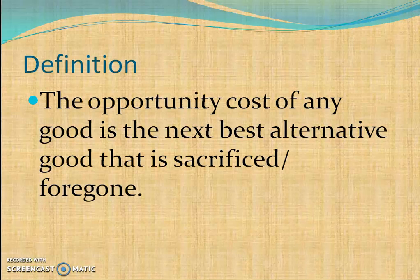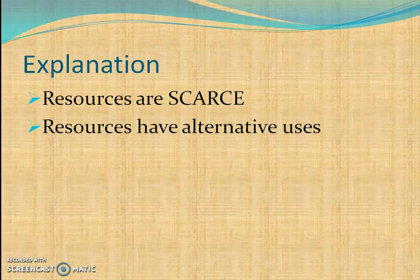The resources that we use to make any production or construction can be used for many different purposes — resources have alternative uses. When we choose resources for one particular purpose or for producing one particular good, we cannot produce some other good with those same resources. Therefore, the opportunity cost of any good is the next best alternative good that is sacrificed or forgone.